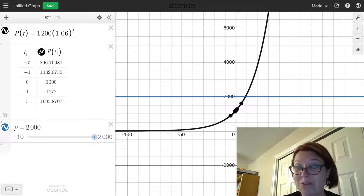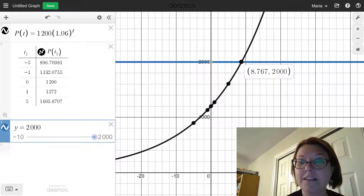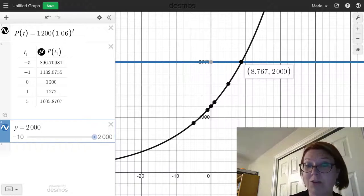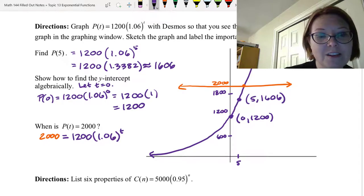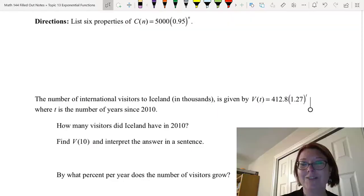In Desmos, we can add y = 2000 to the graph, zoom in a little bit, and just tap where we have an intersection point. And we can see the intersection's at (8.767, 2000). So when is P(t) equal to 2000? It's when t = 8.767. And we could even kind of graph that over here. 8.767 is where we've got that 2000 value.